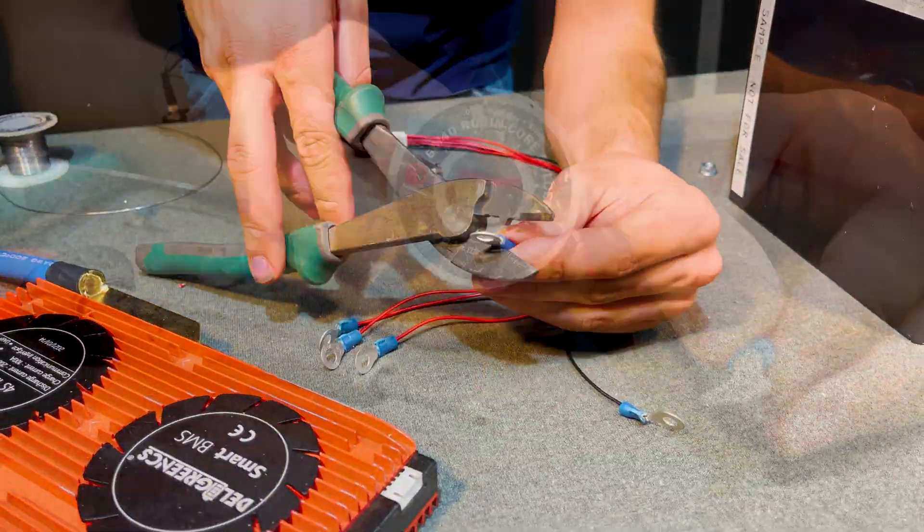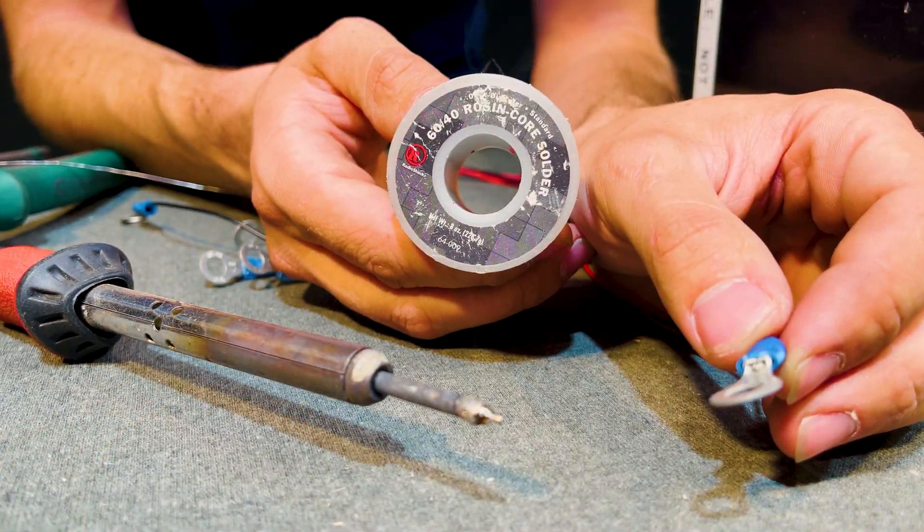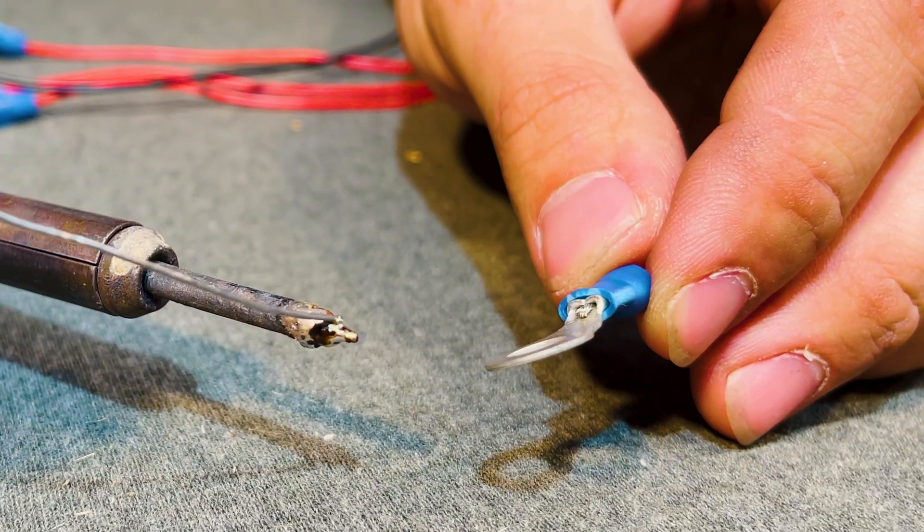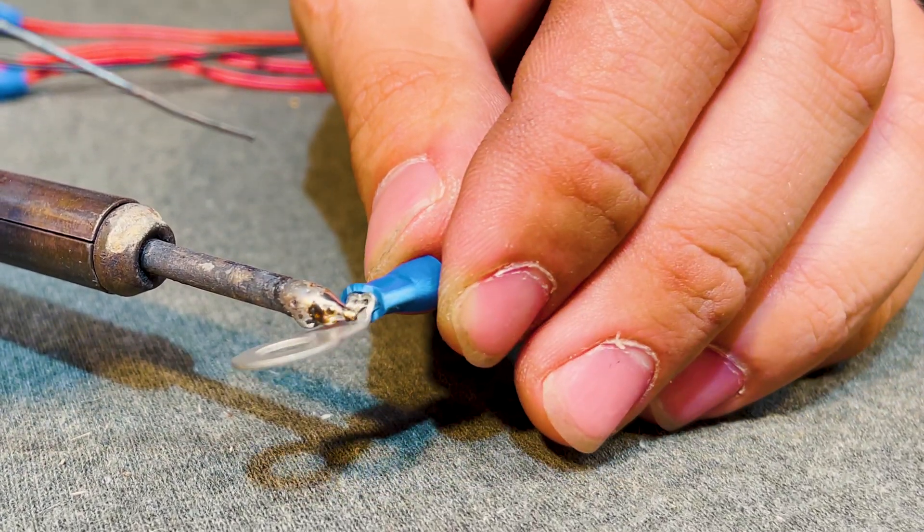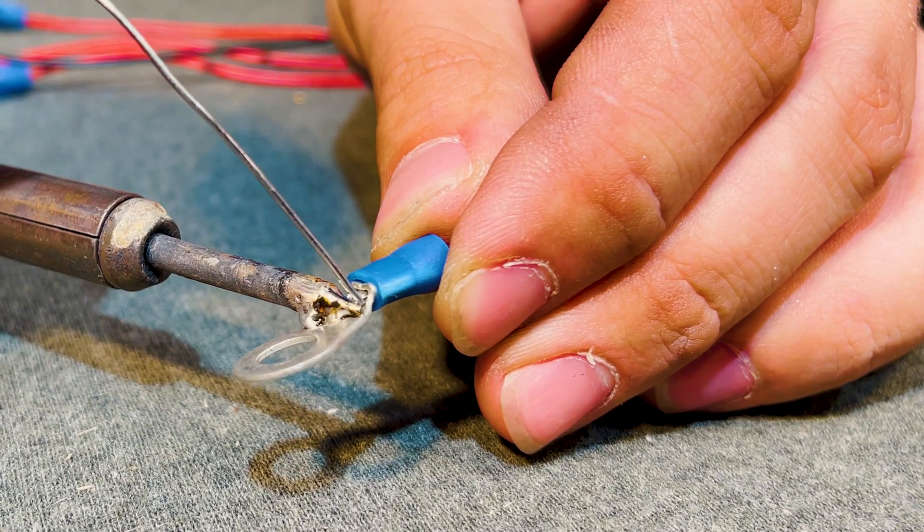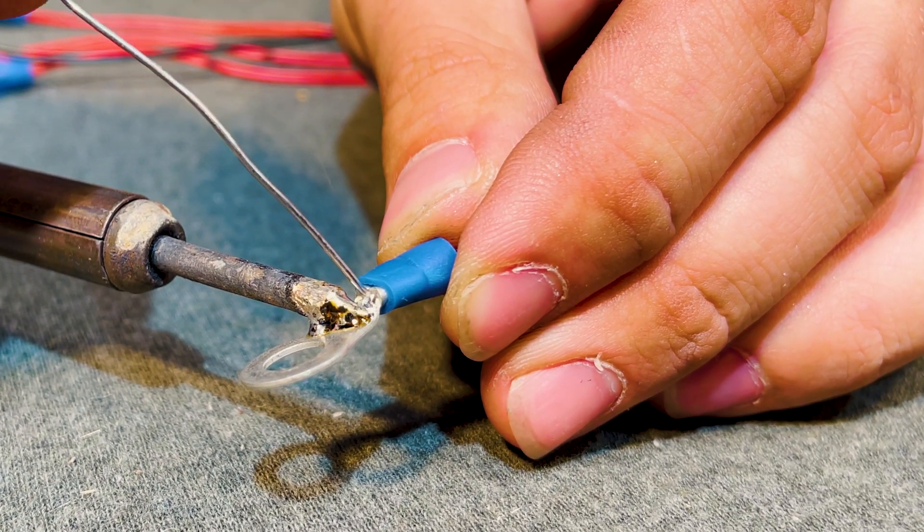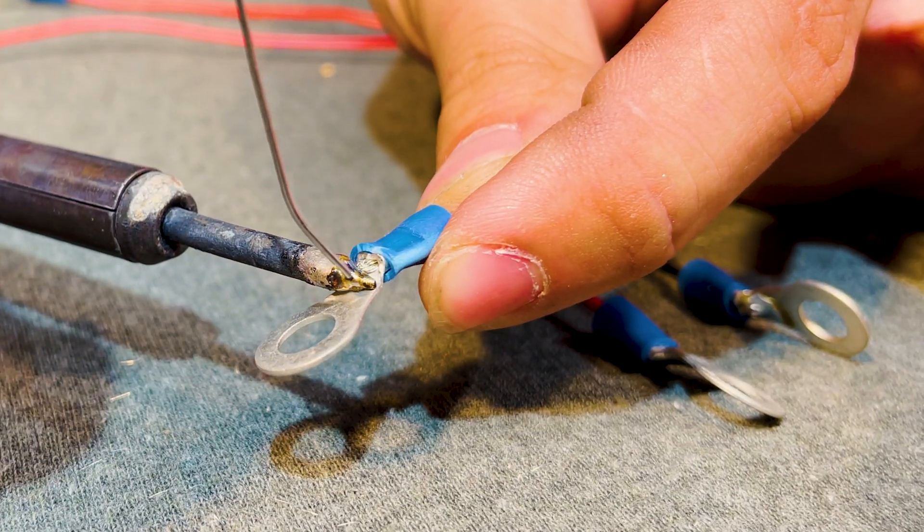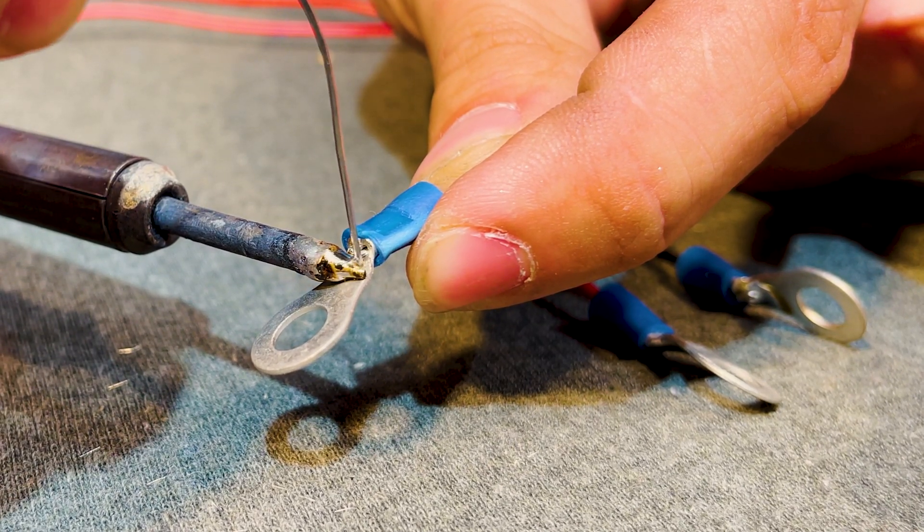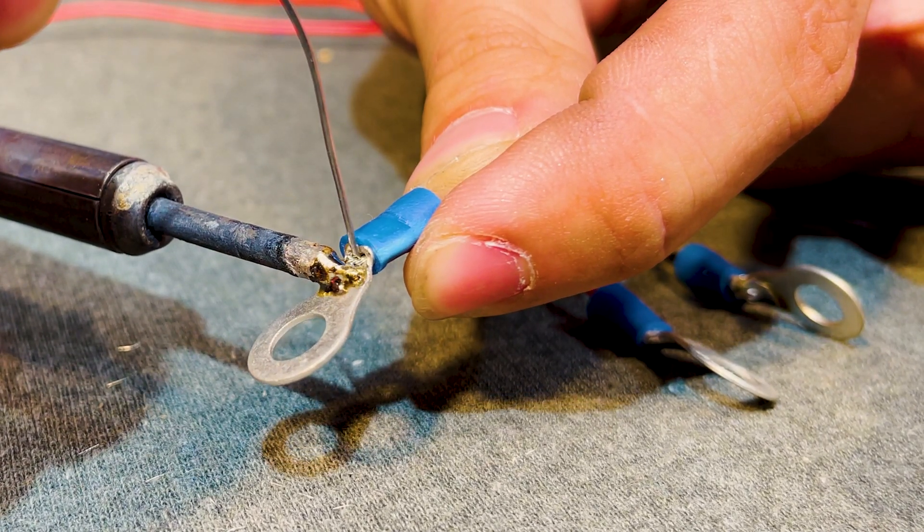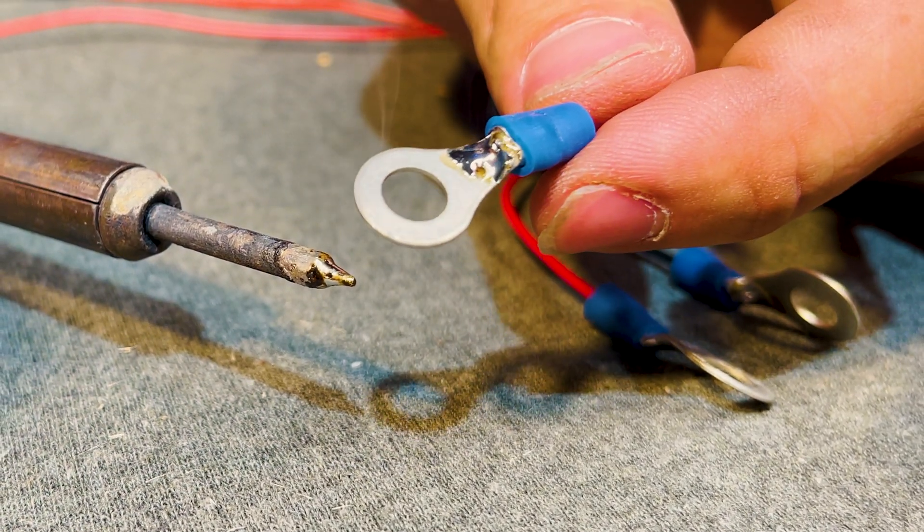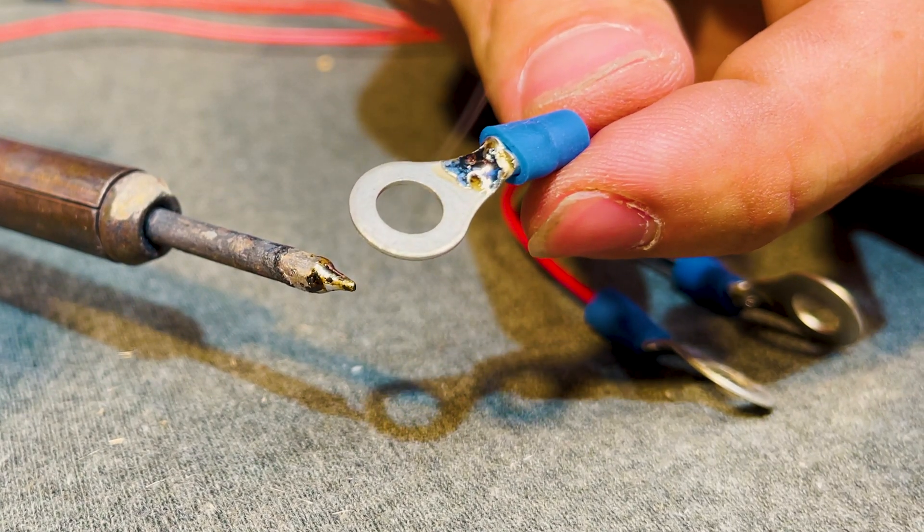For this next segment we're going to be using 60-40 rosin core solder. We like lead solder because it flows easily and we can easily put a dot of solder on the tip of this iron and apply the heat to this terminal and quickly add some solder to where the wires extend into the terminal. One thing to make sure of is that you don't apply all the solder to the tip of the iron but more so bridge the heat over to the terminal and then add the solder to the terminal instead of the iron and that should wet things out and look really nice.